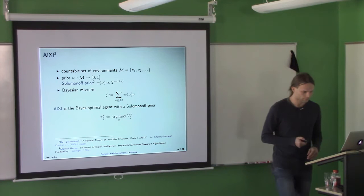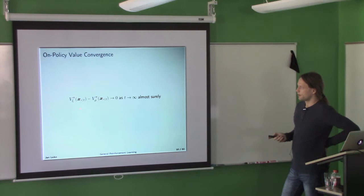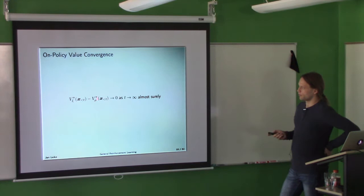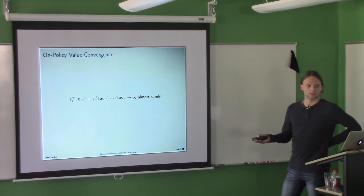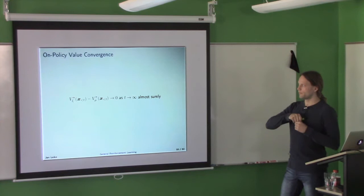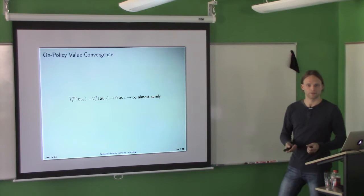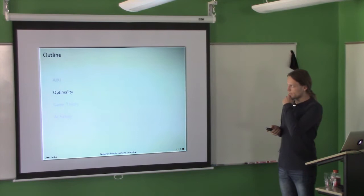How well does AIXI work? One immediate result is on-policy value convergence: for all policies, the value of that policy in the Bayes mixture converges to its value in the true environment μ. In other words, Bayes is good enough to learn the value of any policy you're following. But it's called on-policy value convergence because you're learning the value of the policy you're currently following — it does not tell you what would happen if you had done something else.